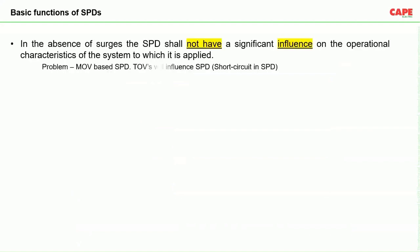SPD has three basic functions. First, in the absence of surges, SPD shall not have any significant influence on the operational characteristics of the system. When voltage is normal and stable, SPD should be completely passive and not create any interference. In MOV-based SPDs, there can be a problem of leakage voltage, and TOV can also influence the SPD — these will be discussed in future webinars.